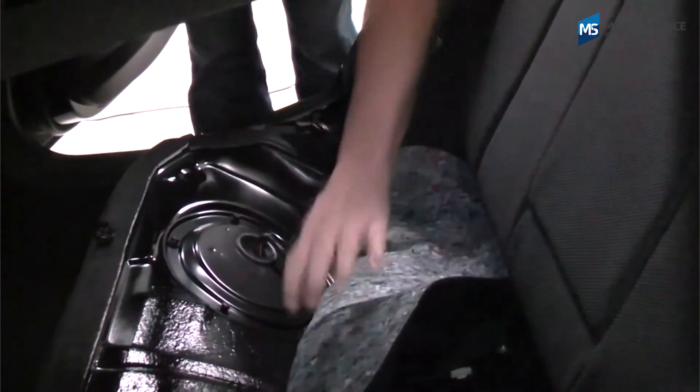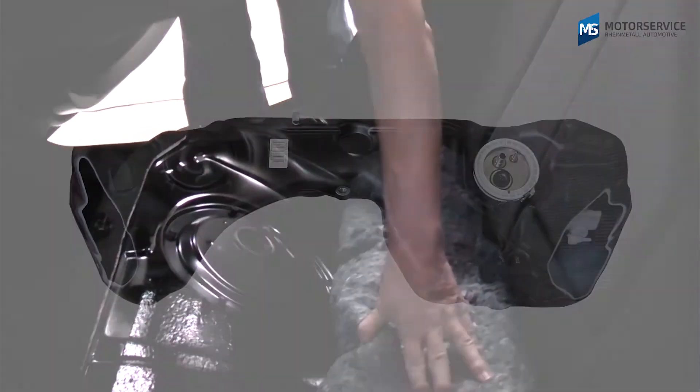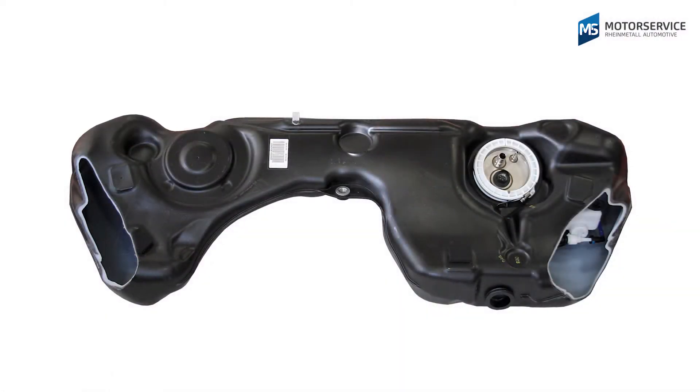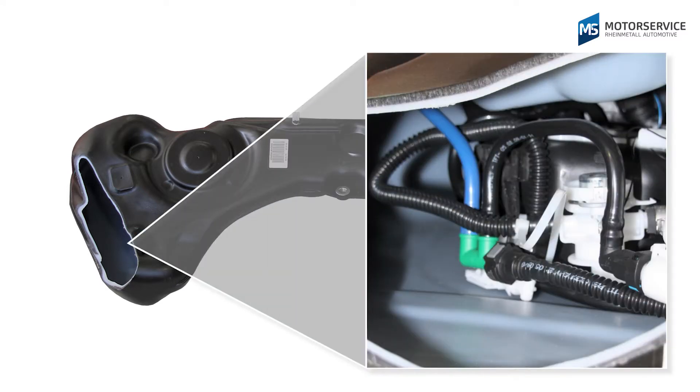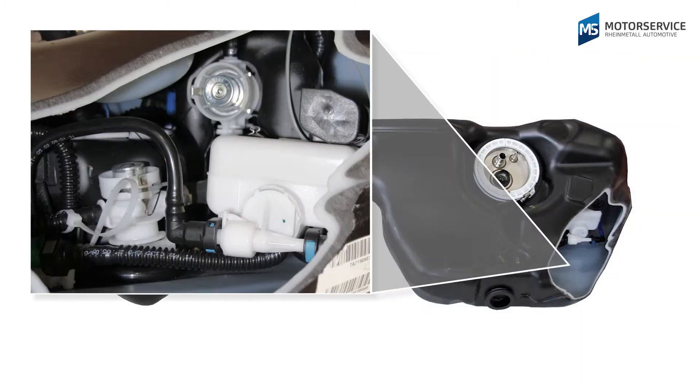The shape of modern fuel tanks is optimized to make the most use of the available design space. In order to comply with the legal requirements for tank leak tightness, ever more components such as the pressure regulator are now located directly in the tank in addition to the fuel delivery module.